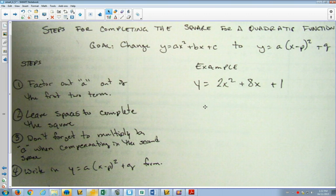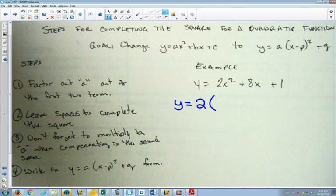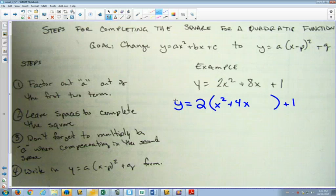All right. So, here's our example. We start by factoring out the a value out of the first two terms. So, my first term is 2x squared. My second term is 8x. I can take that two out of there. That would leave me with x squared plus 4x. I leave a space. I still have plus one there. So, I'm going to leave a space here. And this time, what's different is I leave another space on the same side.